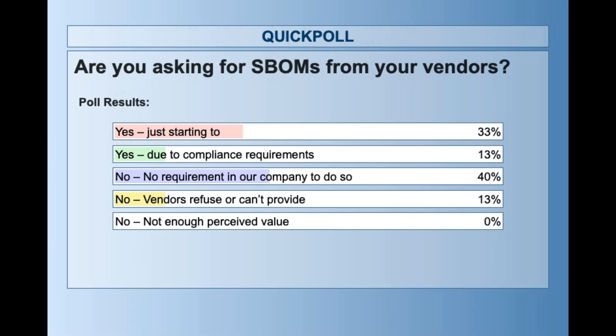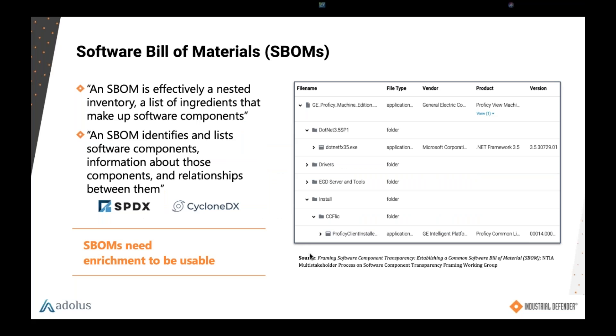Great — it's good to see people are starting to ask for SBOMs. It's unfortunate to see that some vendors refuse or can't provide them — but there are absolutely tools out there that make it possible for vendors to do this. Industrial Defender is a great example; we'll generate SBOMs and analyze them. Companies like Caterpillar Solar Turbines and OSIsoft are all doing a really good job on their SBOMs. It's absolutely possible.